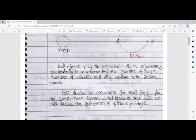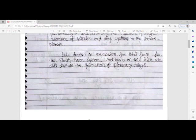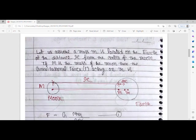Let us now derive an expression for tidal force for the Earth-moon system. Based on this system, later we will discuss the formation of rings around Jovian planets. Here we assume a mass m is located on Earth at a distance r from the center of the moon.